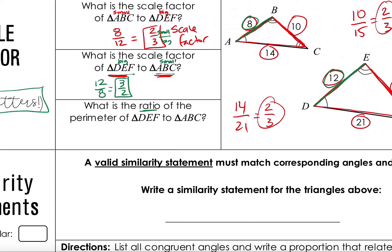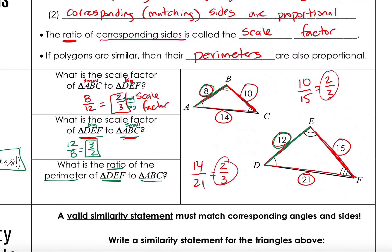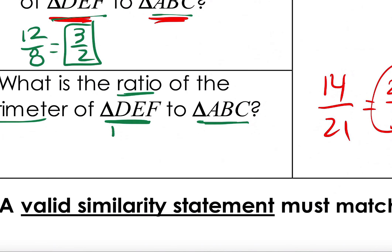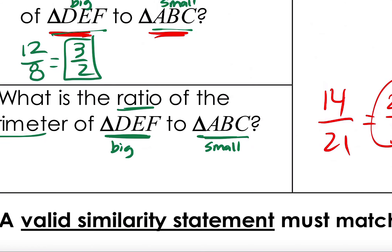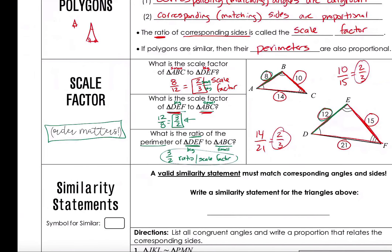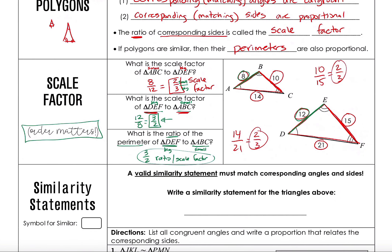What is the ratio of the perimeter of triangle DEF to triangle ABC? We said perimeters are also proportional with the same scale factor. We're going from big triangle to small triangle, and the scale factor from big to small is 3 to 2. So the perimeters are also in a 3 to 2 ratio.